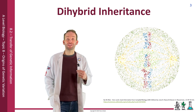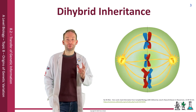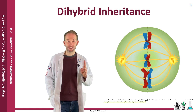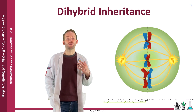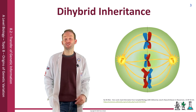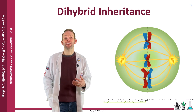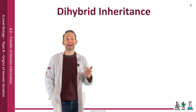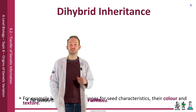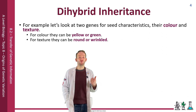We now know this through studying meiosis. Homologous pairs can arrange themselves either way around in metaphase one, and this is true for each pair regardless of the other one. For example, let's look at two genes for seed characteristics — their colour and their texture. Colour could either be yellow or green, and texture could be round or wrinkled.